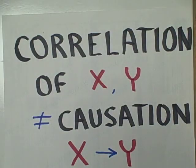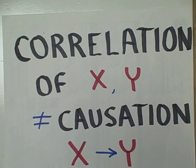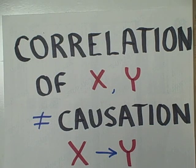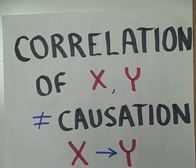Even when we have a strong correlation — even a perfect correlation of 1 or negative 1 — do not assume that the correlation of two variables x and y necessarily means that variable x is the cause of variable y. In order to infer causation from correlation, we have a number of other steps that we are going to have to go through.